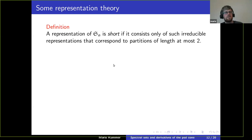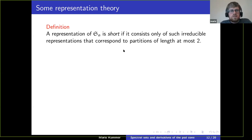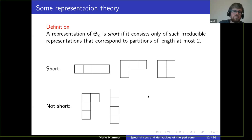Let's recall that if you look at representations of the symmetric group S_n, each representation is a direct sum of irreducible representations, and the irreducible representations of S_n have been classified. They are in bijection to partitions of n. I call a representation of S_n 'short' if it corresponds to a partition of length at most two.